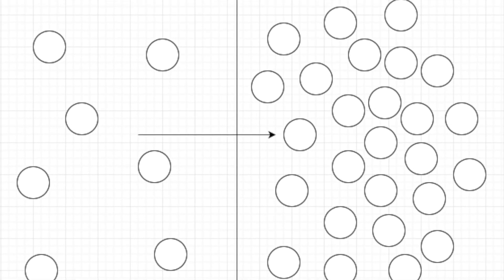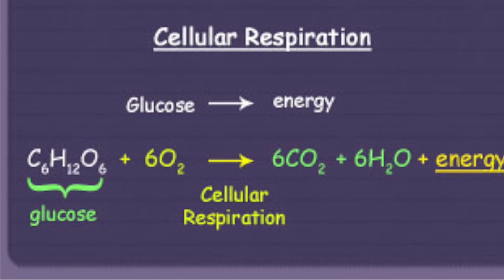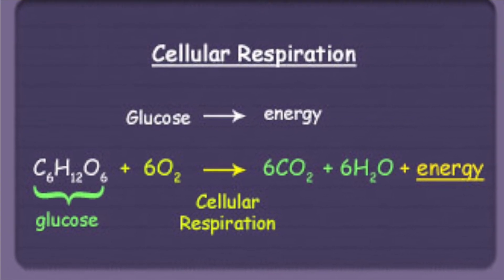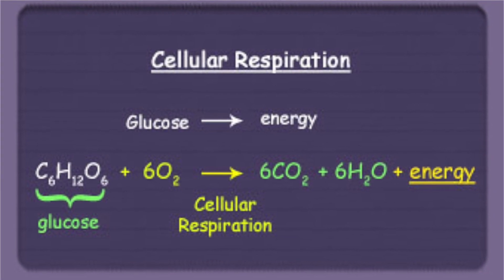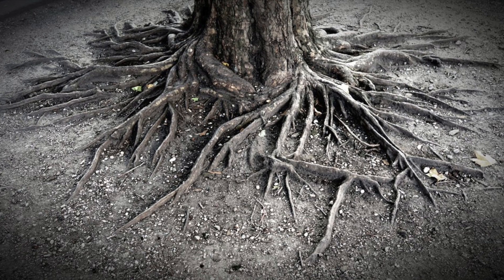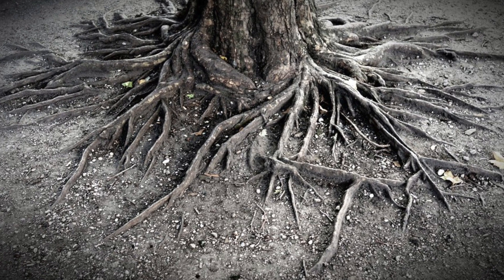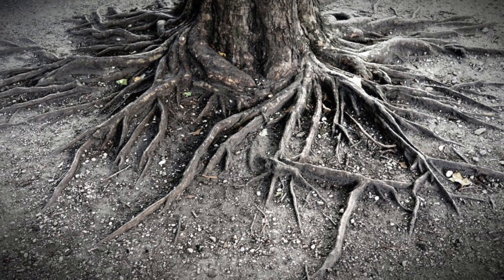Active transport takes a lot of energy, which cells receive through cellular respiration. Therefore, cells which do a lot of active transport, such as root hair cells, usually have many mitochondria to provide them with energy. So active transport can be very important.